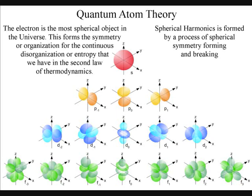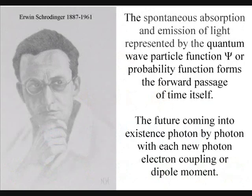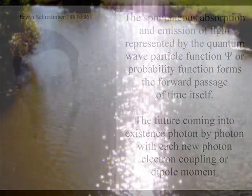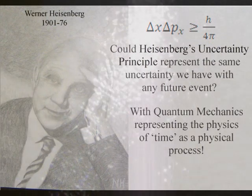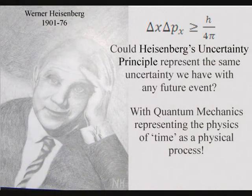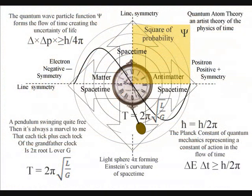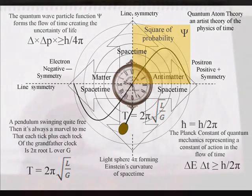In this new theory, the paradoxes of quantum mechanics can be explained, giving us a deeper understanding of why we have a periodic table of elements. This theory is based on just two simple postulates: the first is that the quantum wave-particle function, or probability function, represents the forward passage of time itself, photon by photon. The second is that Heisenberg's uncertainty principle, formed by the probability function, is the same uncertainty we have with any future event.